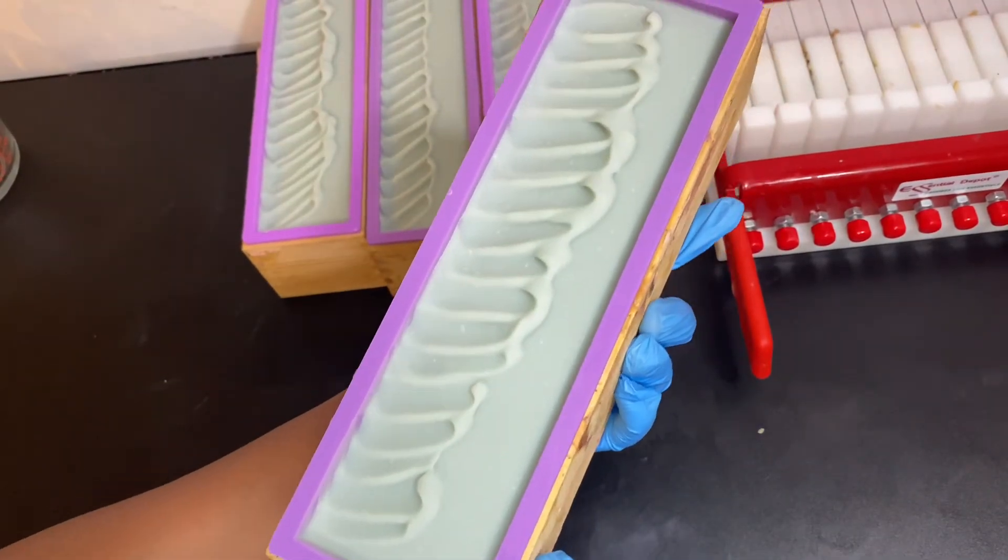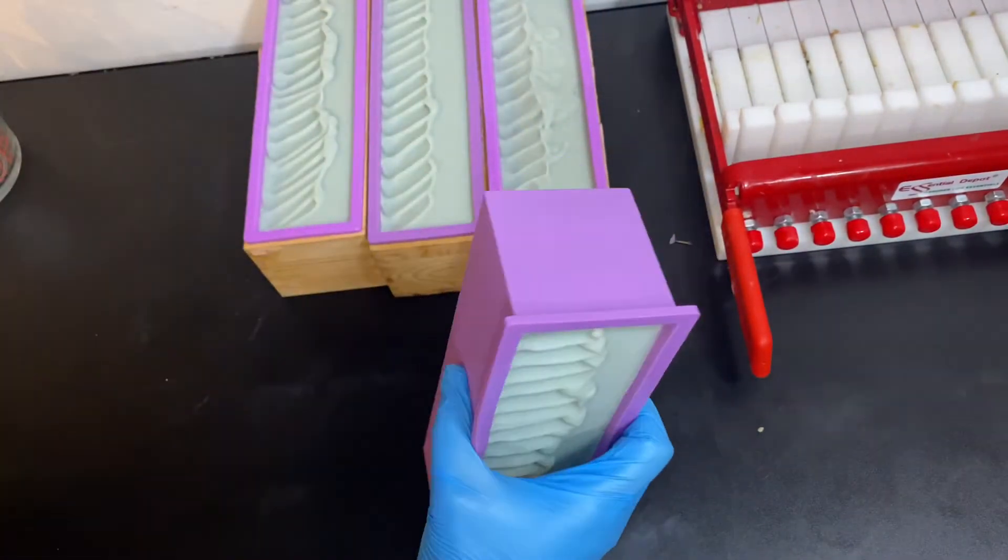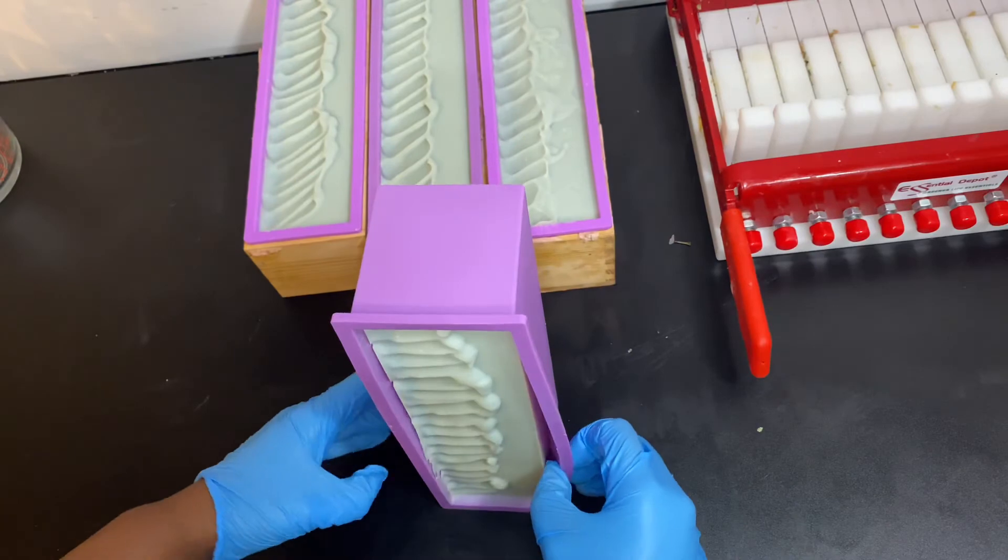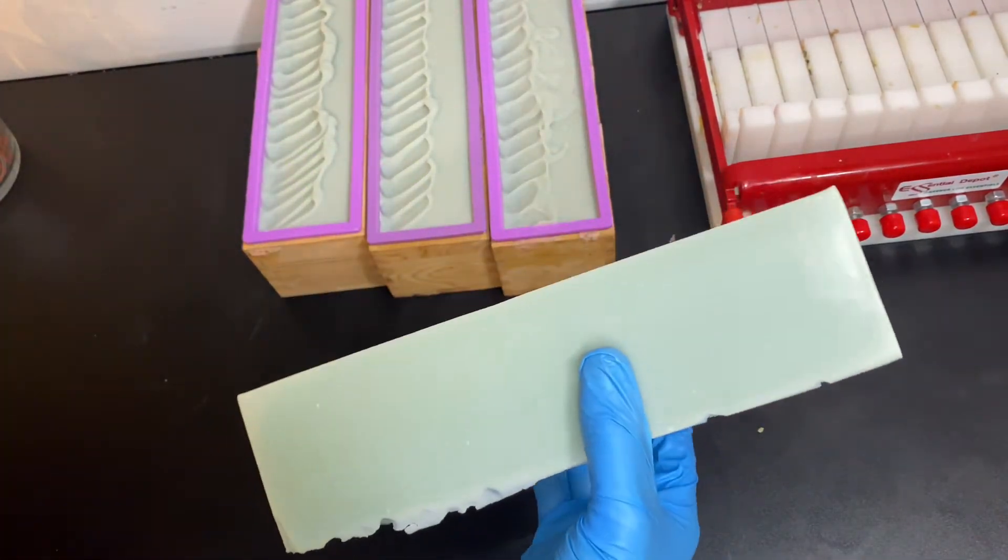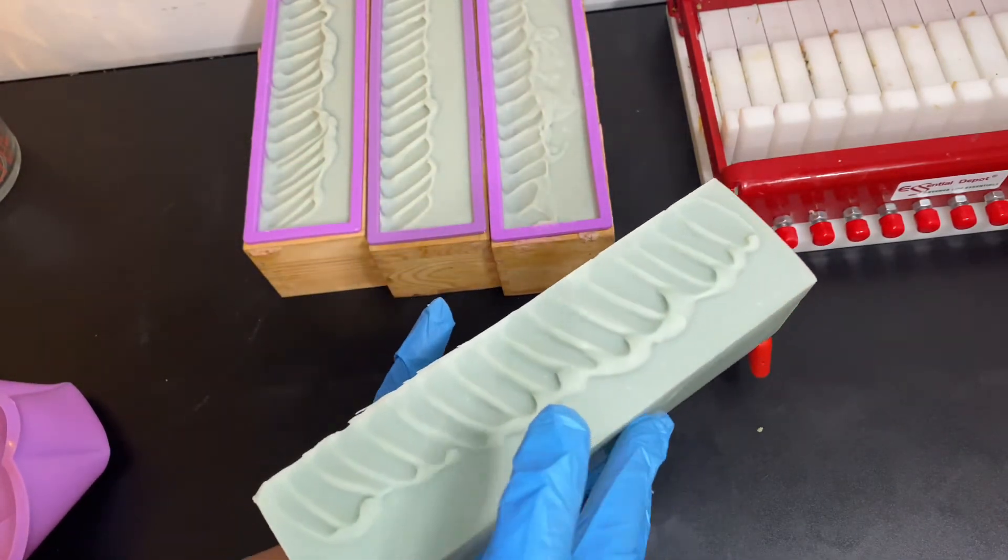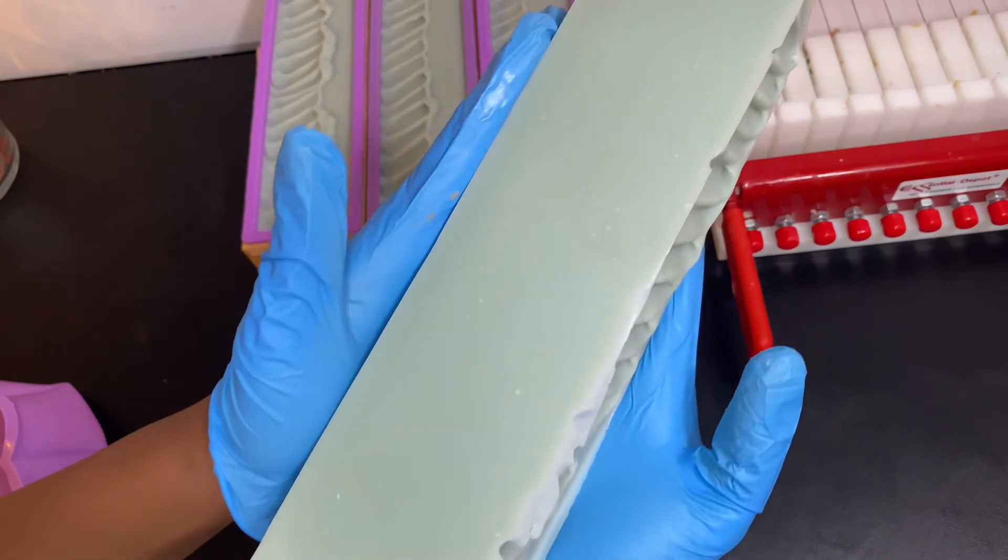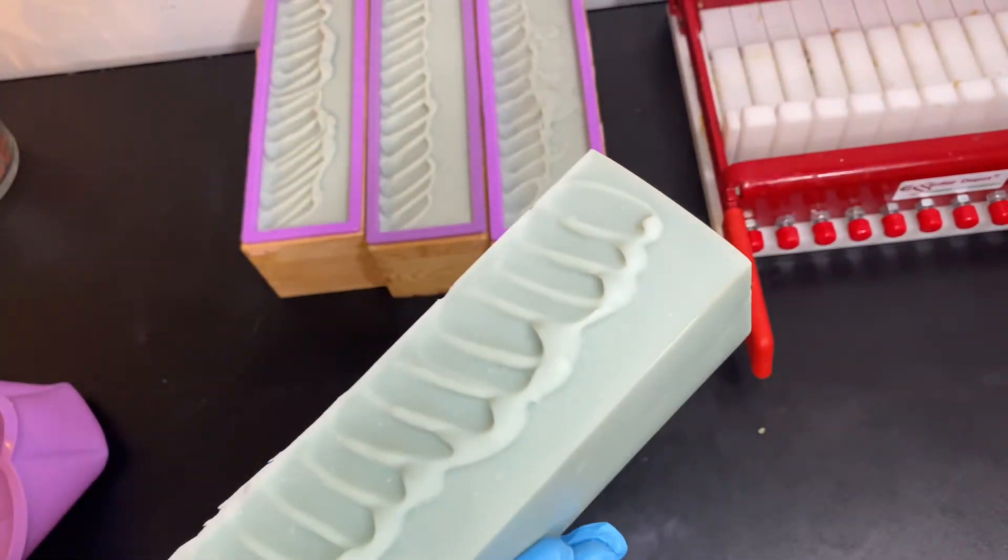Okay guys, so it is the next day and look at these soaps. They are just so beautiful. We're going to unmold them and then we are going to cut them and let them cure. Curing means when you let the water dry out of them so that when you use them, the bar soap lasts longer. But look how pretty these soaps are.